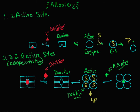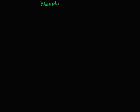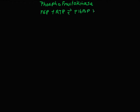Let's look at phosphofructokinase. It's an important enzyme in glycolysis because it catalyzes a unique reaction: it converts fructose 6-phosphate plus ATP to fructose 1,6-bisphosphate plus ADP. It is allosterically regulated because the reaction it catalyzes has a large favorable free energy of minus 5 kilocalories per mole, and it's unique to glycolysis, so it's important for the cell to be able to tell this enzyme when to speed up and slow down.